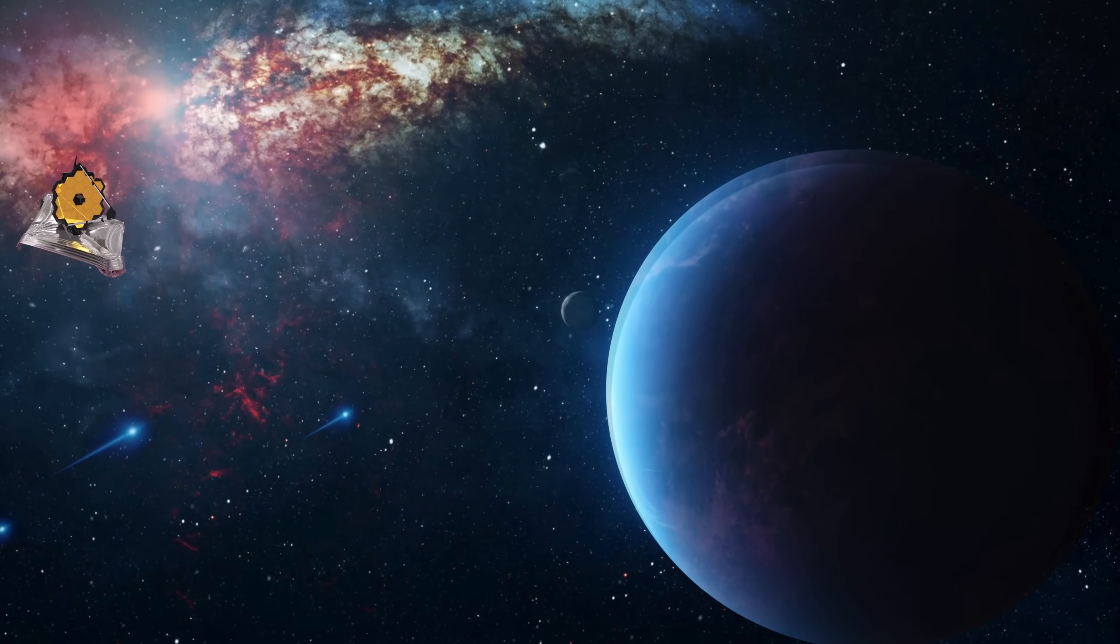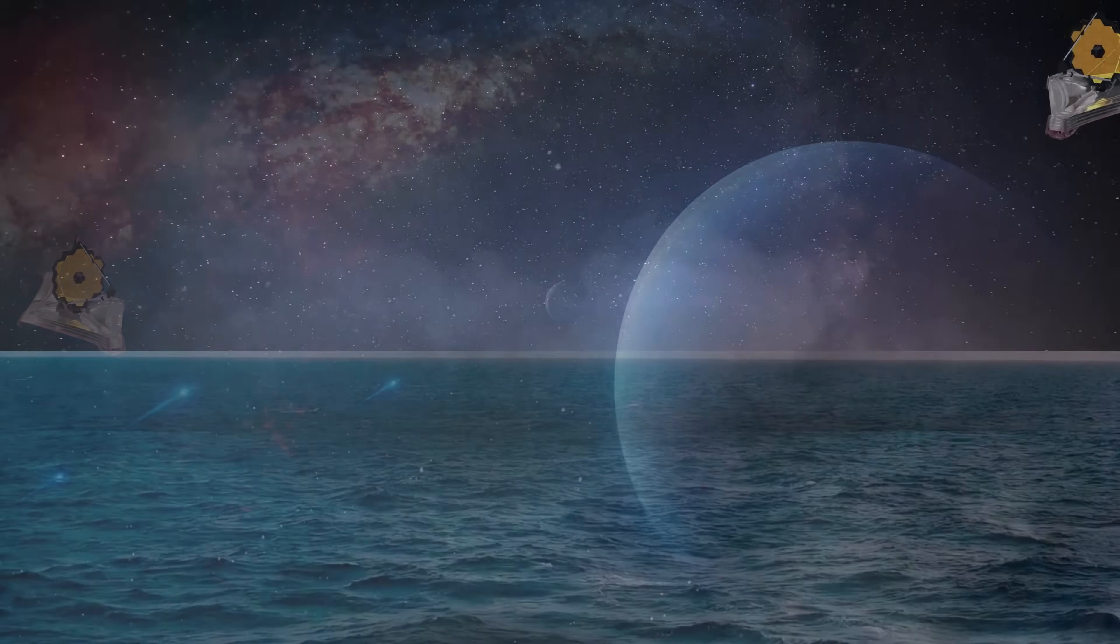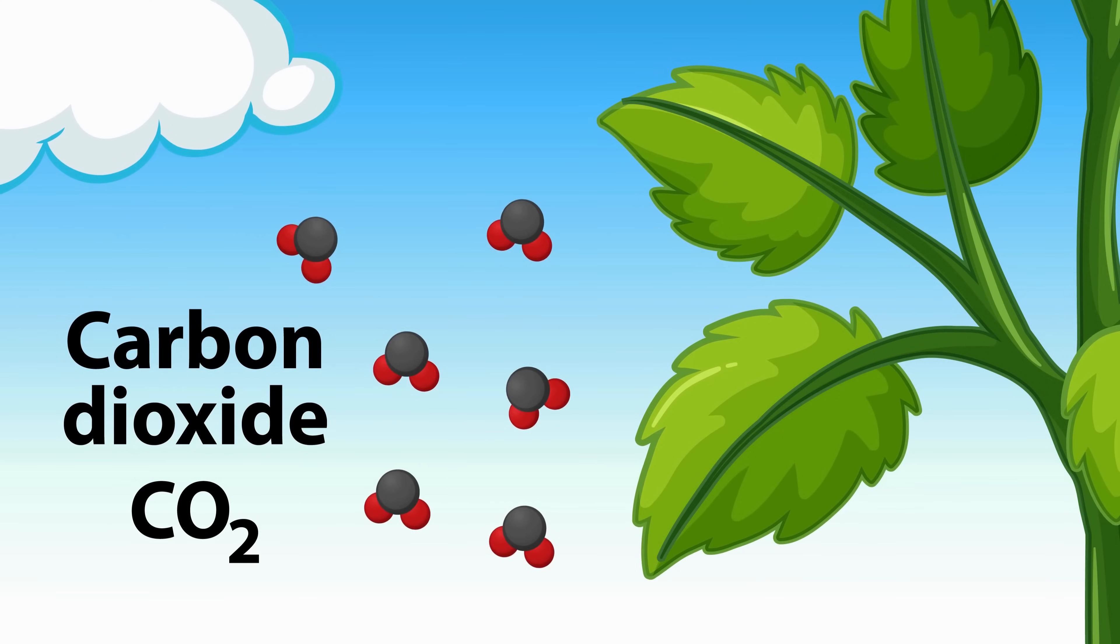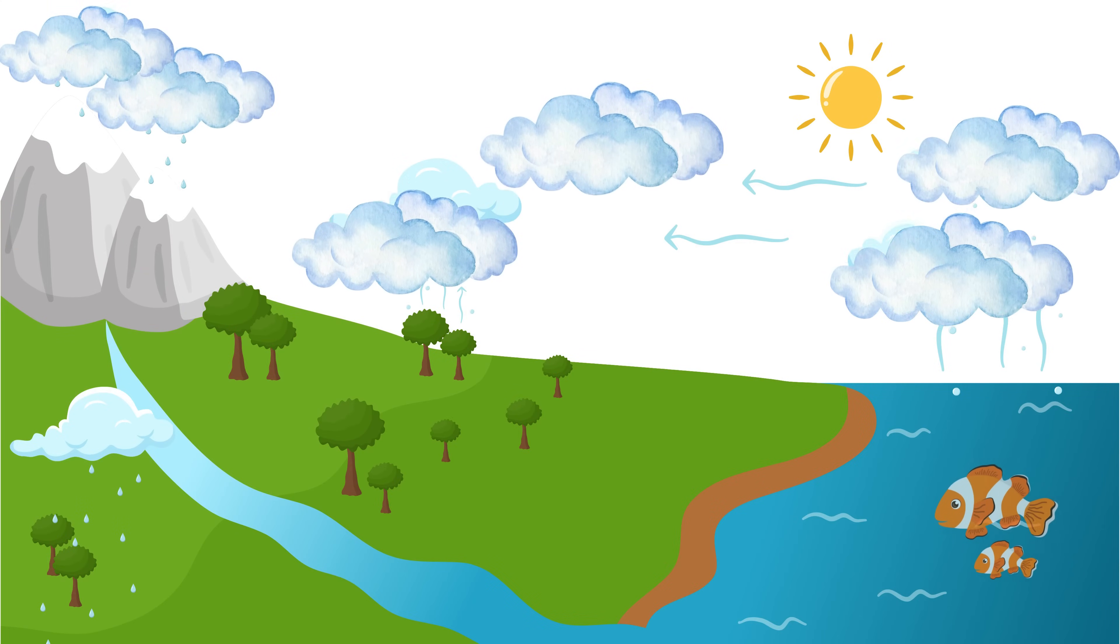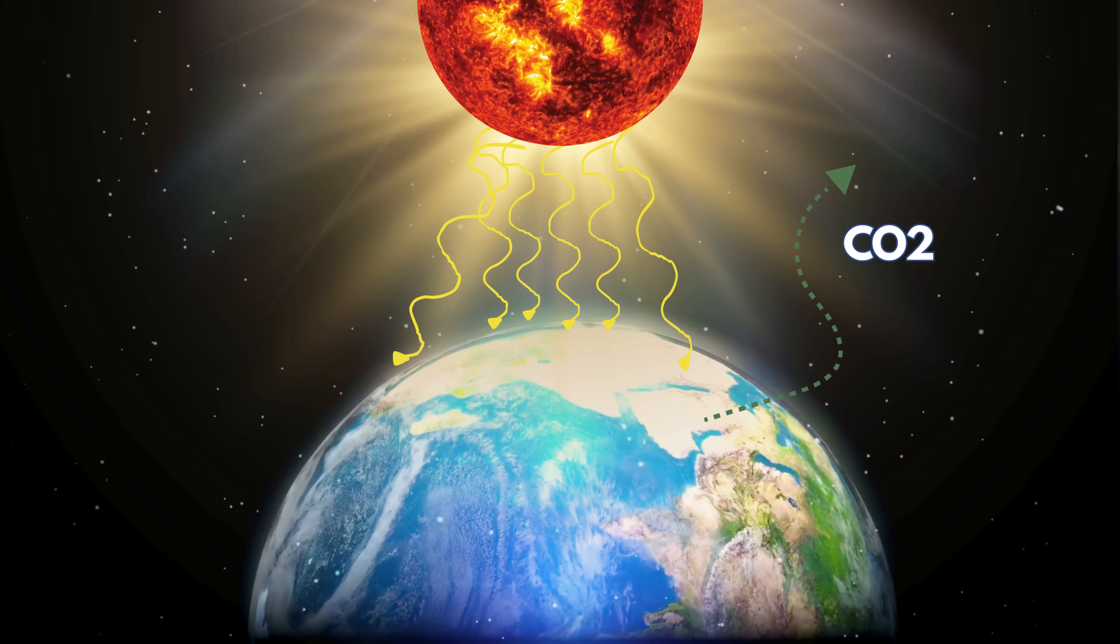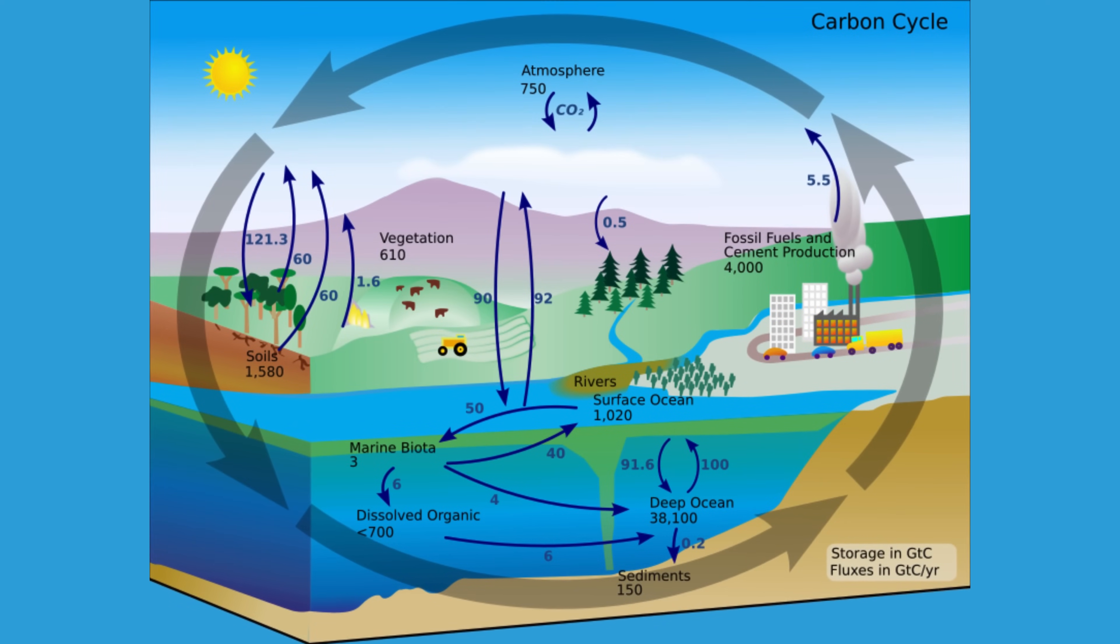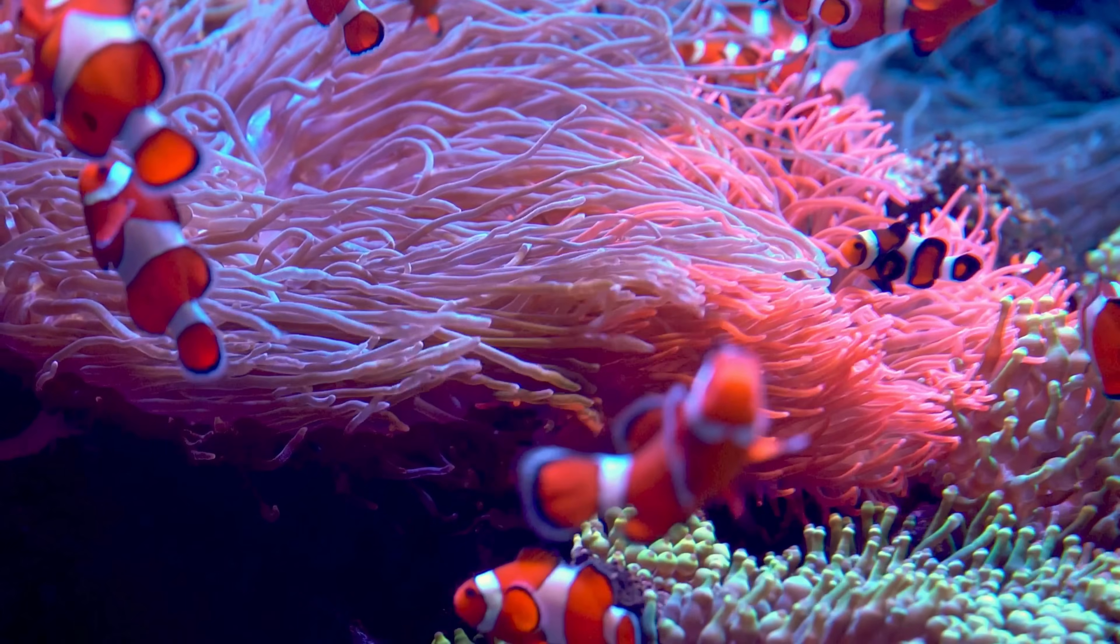By studying these wavelengths, scientists can detect the presence of certain molecules such as methane and carbon dioxide, that can provide clues about the environment and the possibility of supporting life. Methane and carbon dioxide are especially interesting because on Earth, these molecules are usually connected to biological processes, like those from living things.